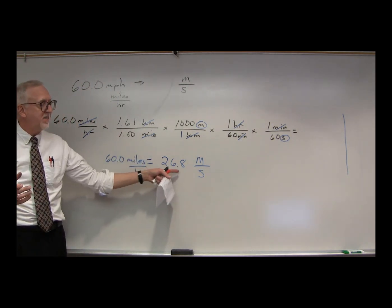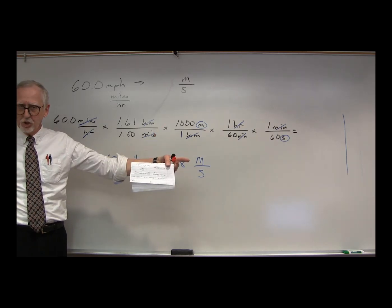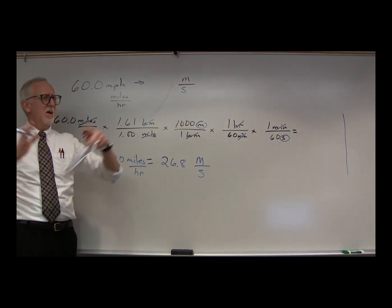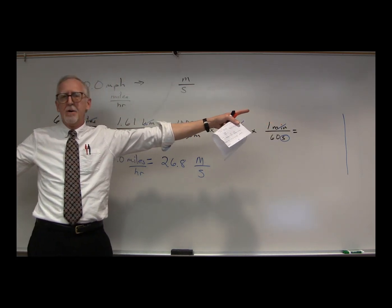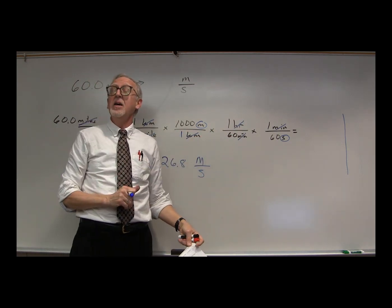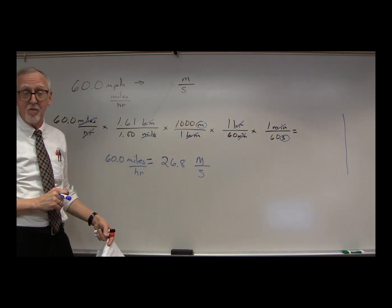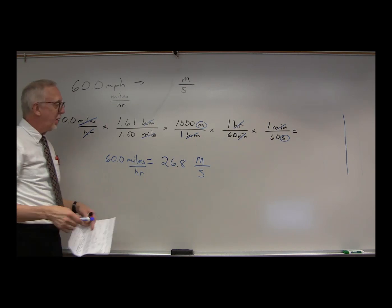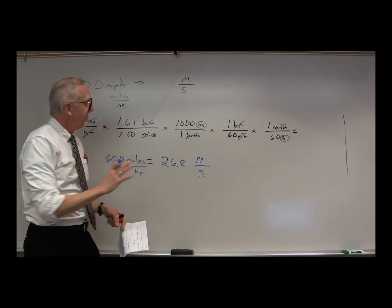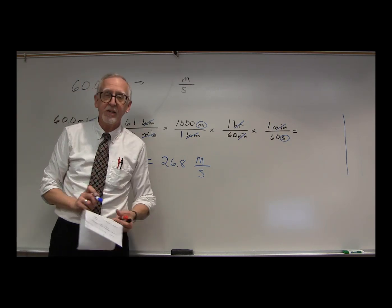Would it be 2.68? No, that's way too short. We know that would be wrong. 268, about the distance of a football field. No, that's too far. A car would not be going that far at 60 miles an hour every second. So a ballpark figure, that does seem to be good. Alright, very good. So there we go. Now, just a couple more points.